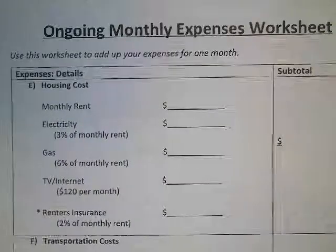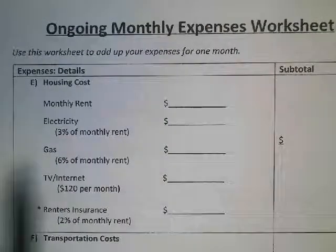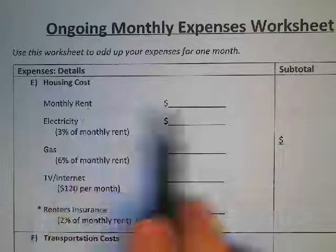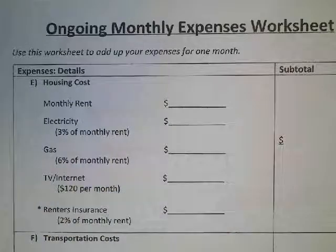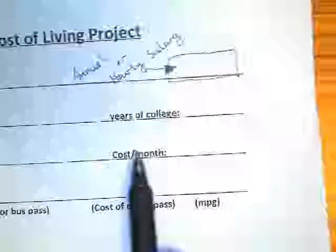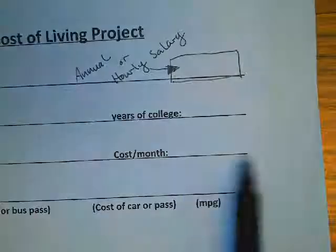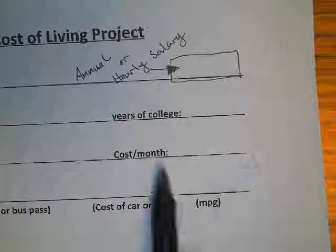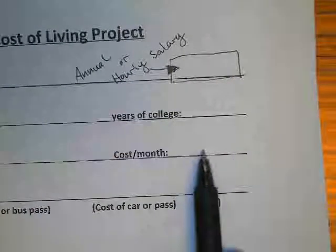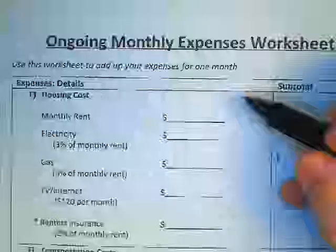First thing you'll want to do is use your monthly rent you already have. This number comes from the front side of that page. When you're looking at your housing and you have your costs per month, whatever number is right here — that's your monthly rent. We would place that value right here.